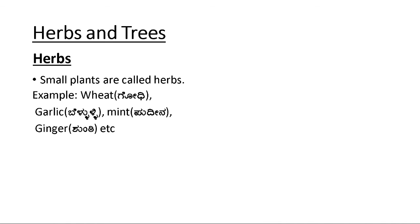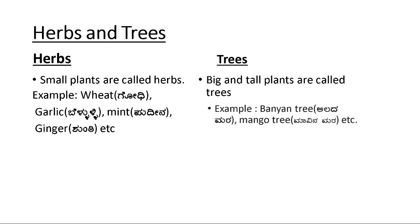All these plants are small, so that's why we call them as herbs. Moving on to trees, big and tall plants are called trees. Examples like banyan tree, mango tree, banana, etc.